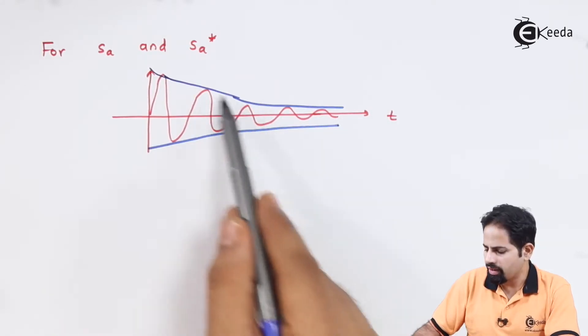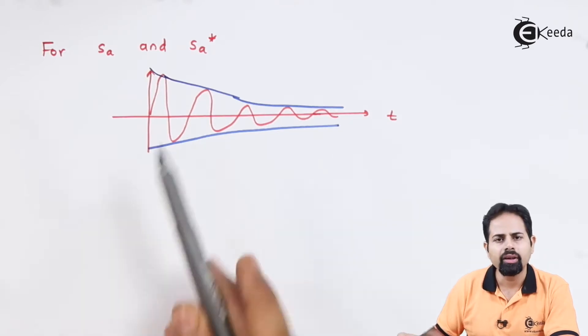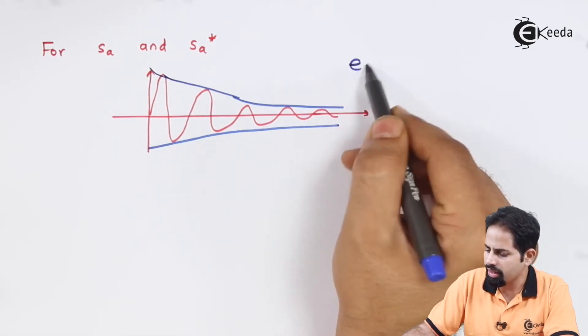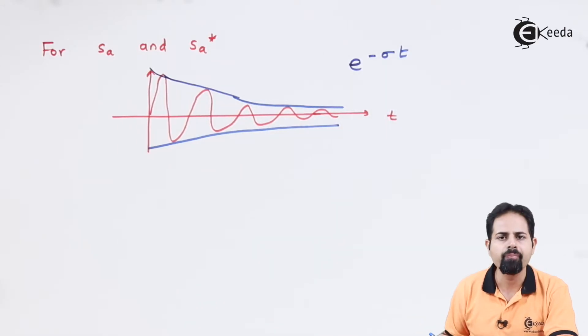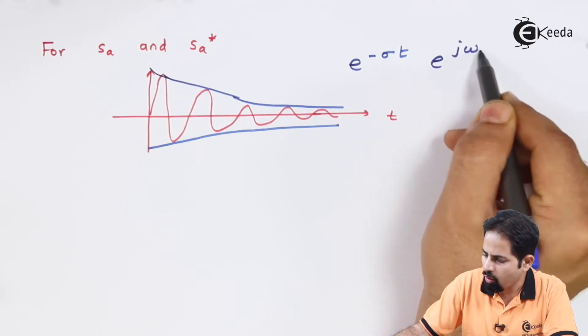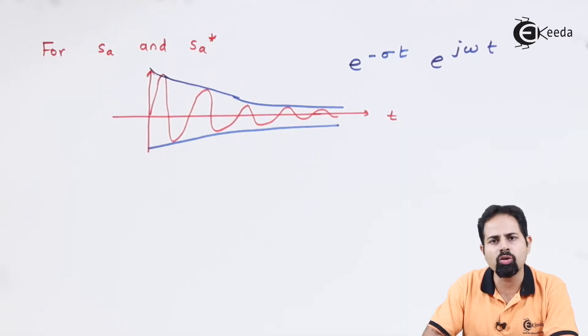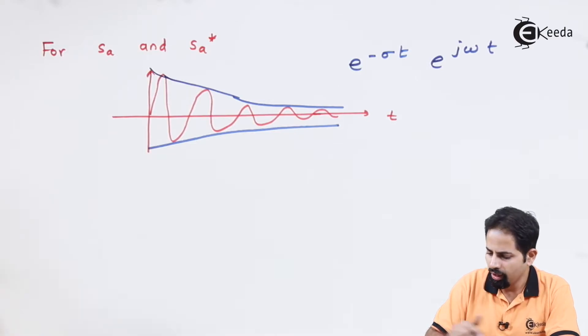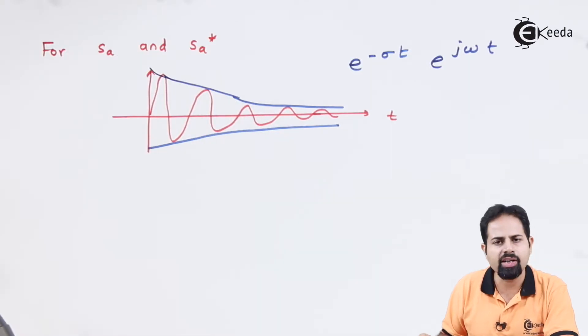So these blue lines say that there is a decaying graph, which is because of this e raise to minus sigma t, and this sinusoidal graph is because it is e raise to j omega t, which results in either sine or cosine when combined. So this is a graph for sa and sa conjugate.